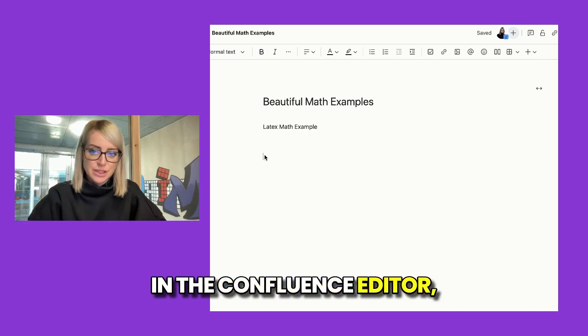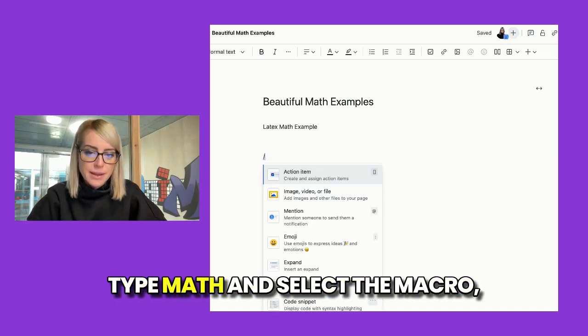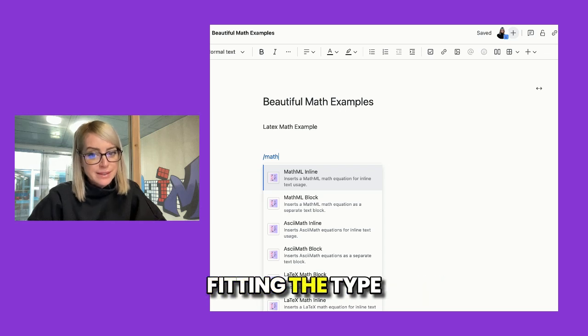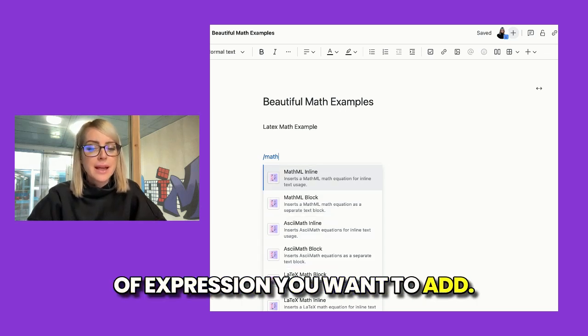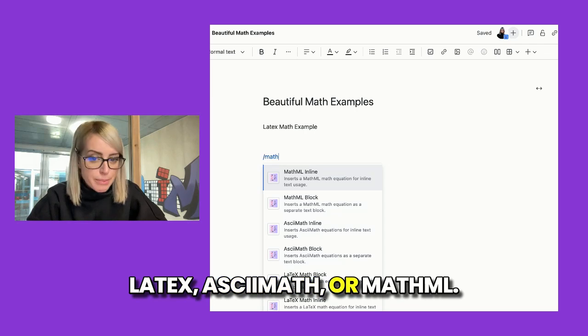In the Confluence editor, type slash math and select the macro fitting the type of expression you want to add: LaTeX, ASCII Math or MathML.